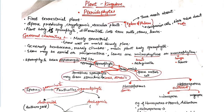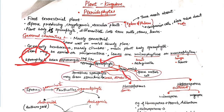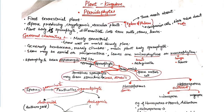Sporophytes bear sporangia. Sporangia is a leaf-like structure where spores are present. Spores are produced through meiosis. Sometimes sporangia form a proper structure — you can see cones and strobili in some pteridophytes.